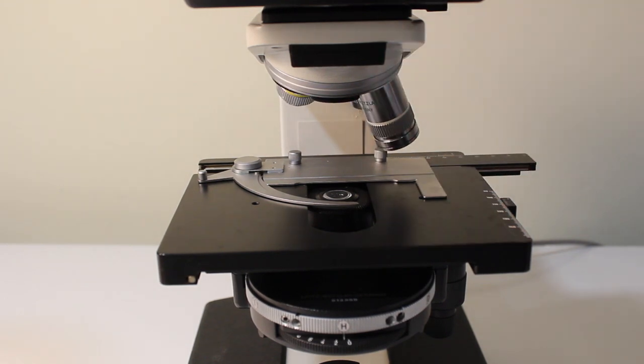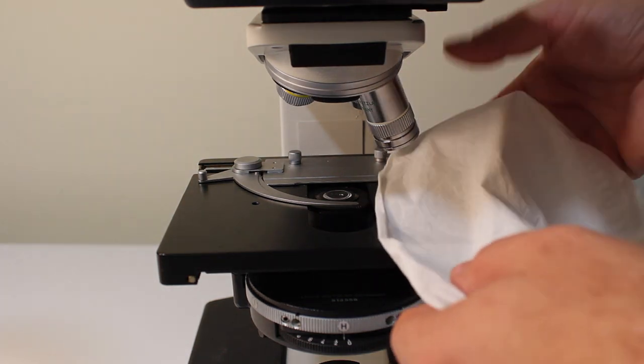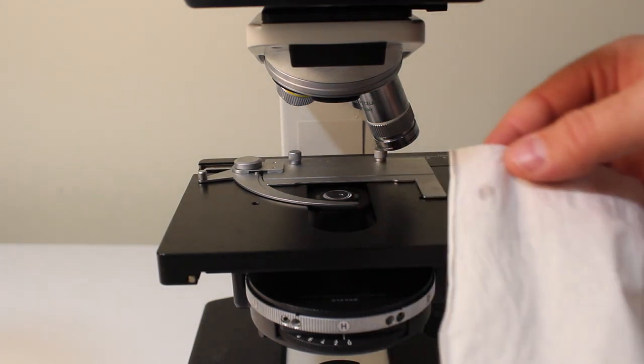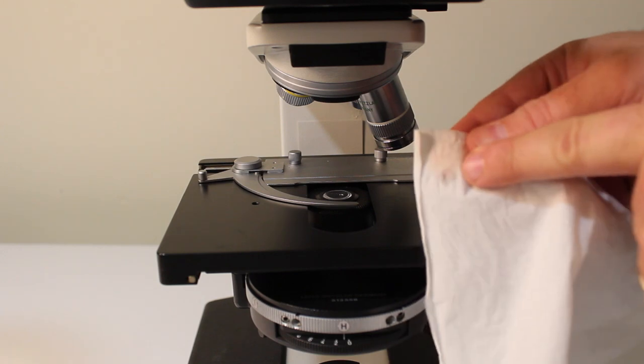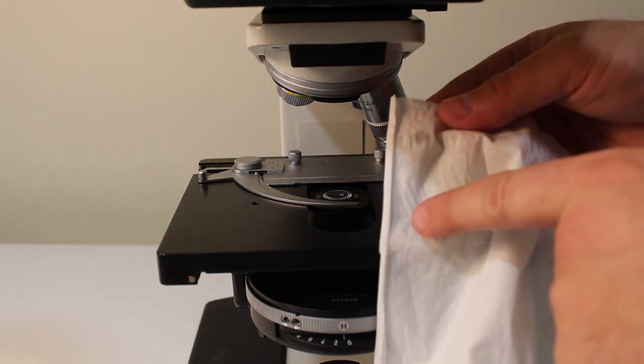Then, just like before, we want to swing our lens out of position so that we can get good access to it. And we're going to dab the lens multiple times, taking off as much of that oil as we can. And so you can see, the first time I dabbed it, a fair amount of oil came off. The second time, there's just a tiny bit, and after that, we have no more oil.